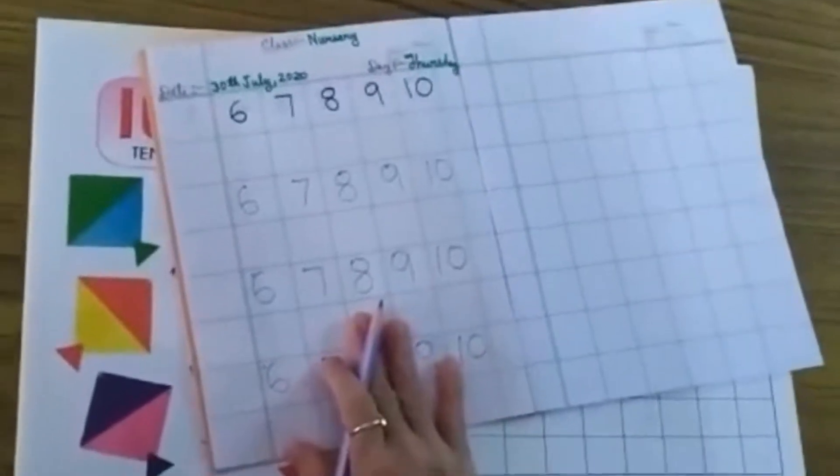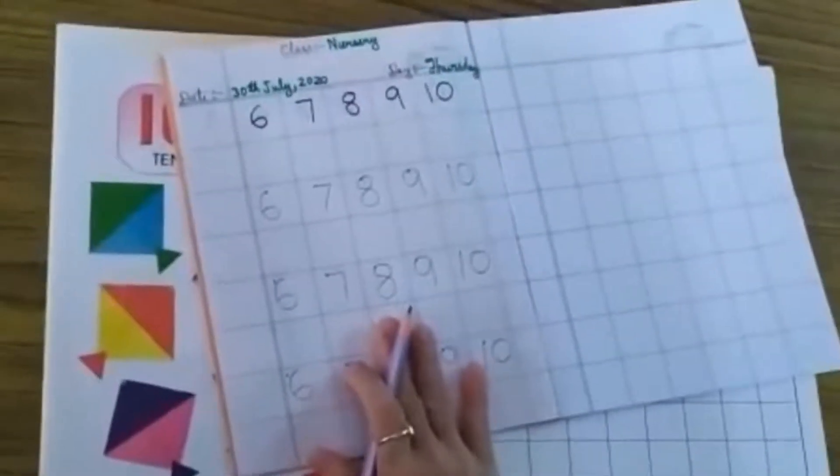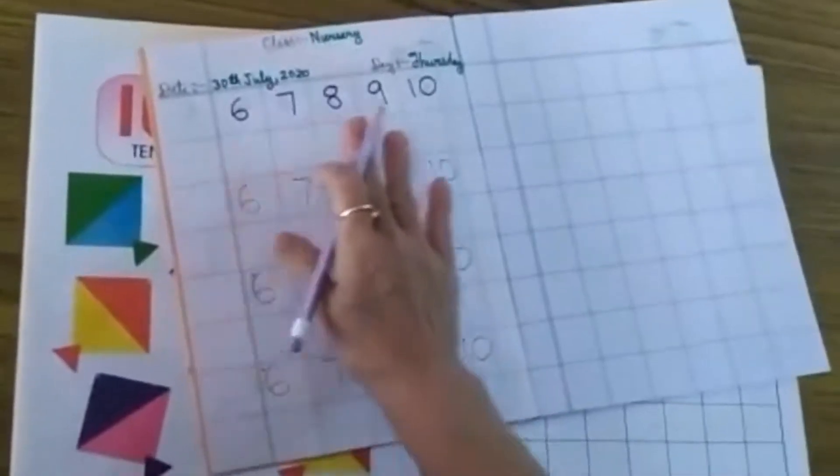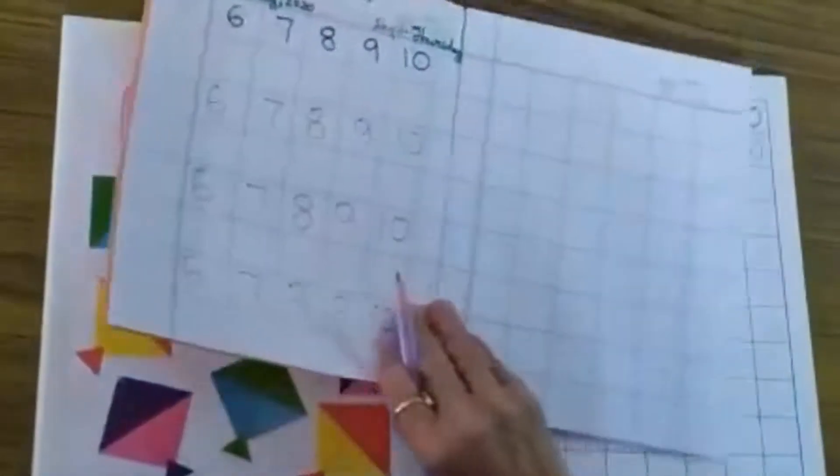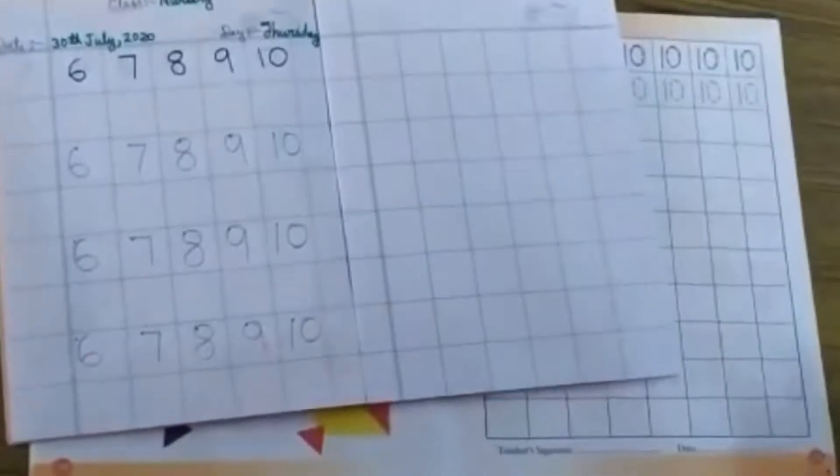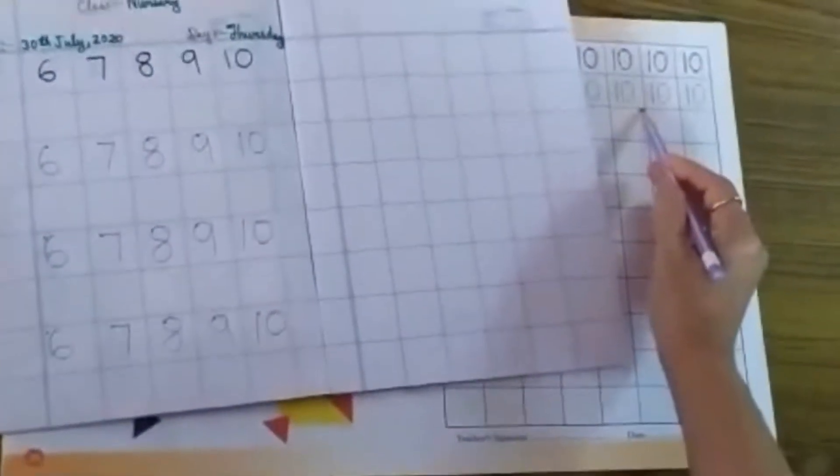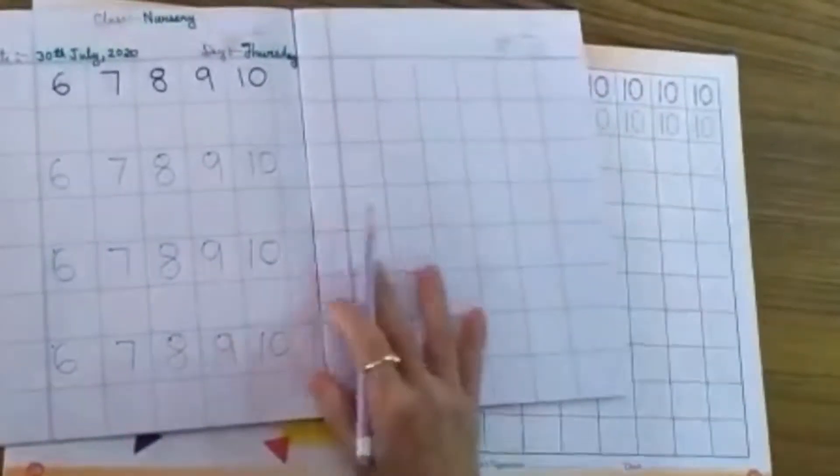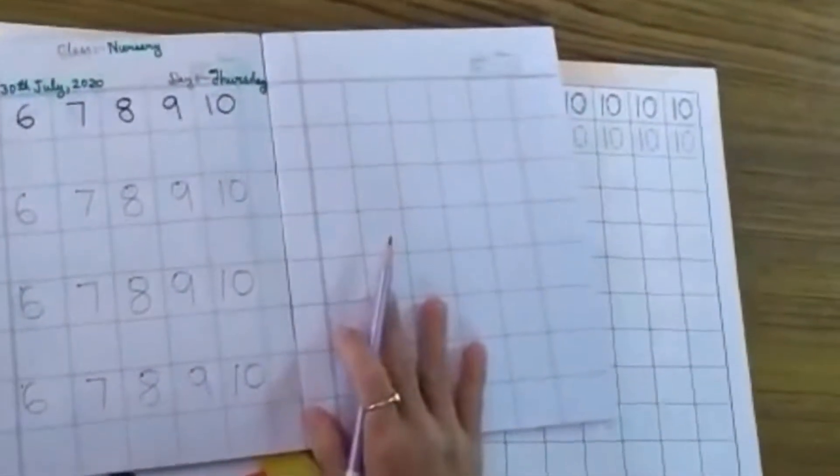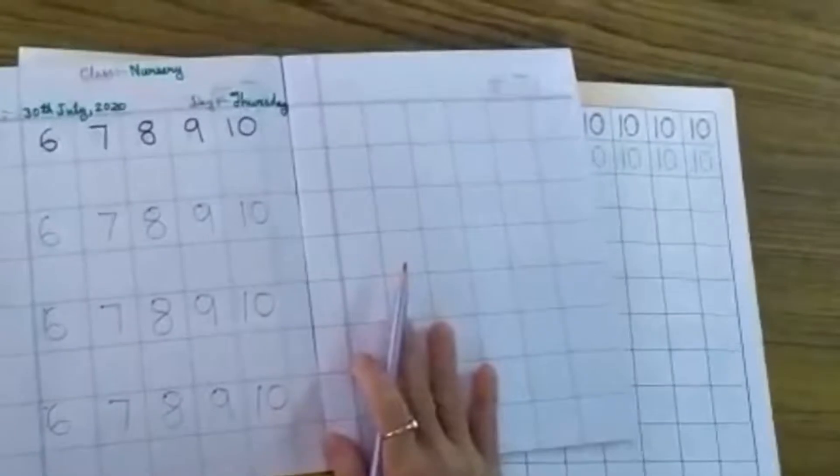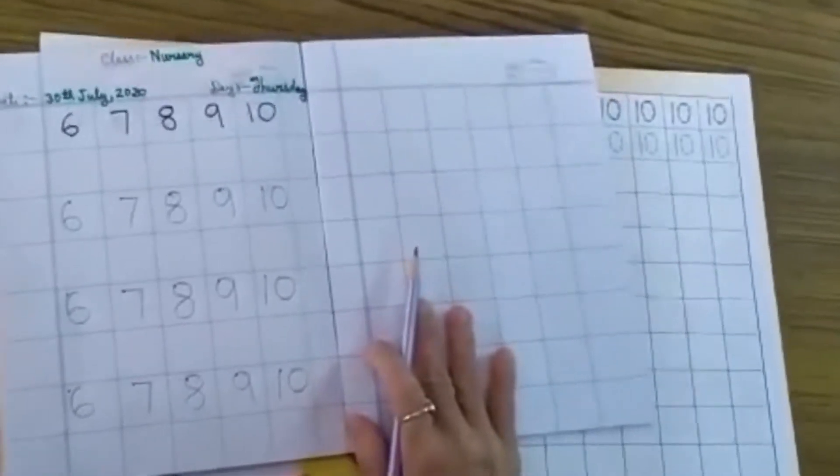This is your homework. And you have to practice at your home 6 to 10. And in Maths book page number 21, number is 10. And send me this homework as soon as possible. Thank you children. Bye bye.